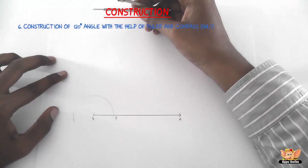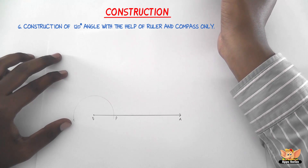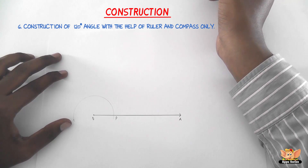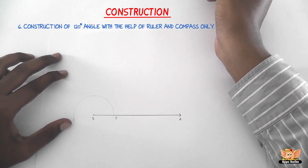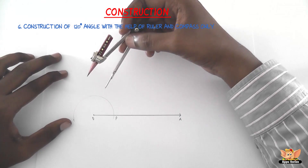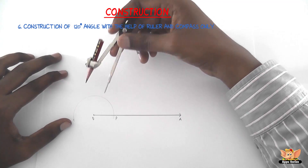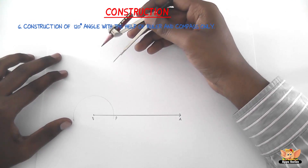The third step is with P as center and the same radius, draw another arc that cuts the arc that we just drew at Q.